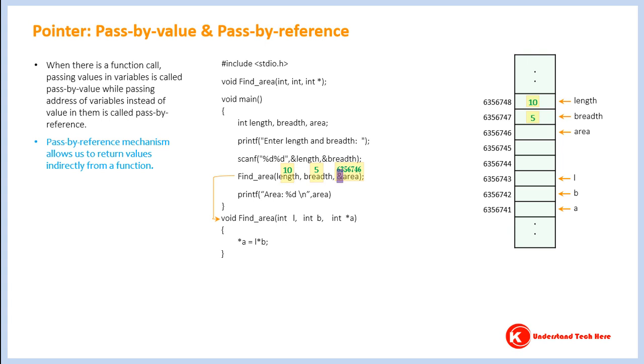We say 10, 5, and 6356746 will be passed and will be in variables L, B, and A.